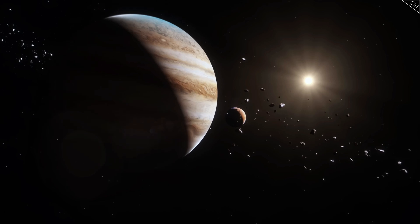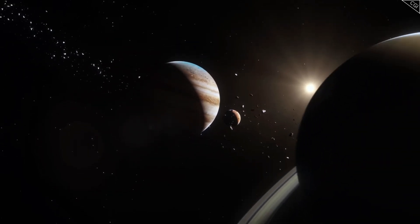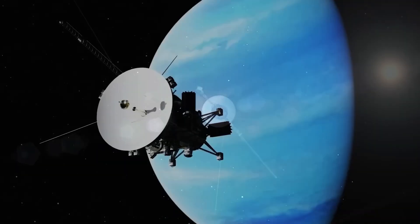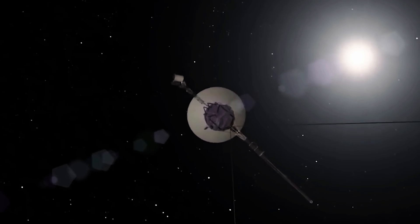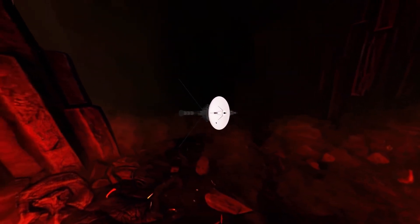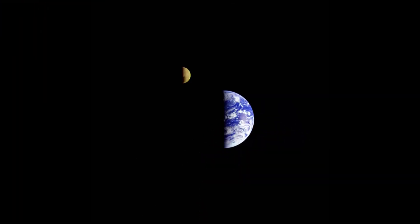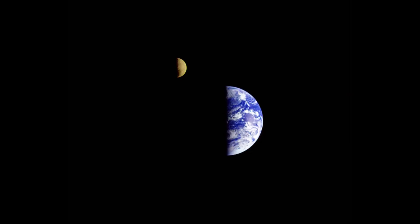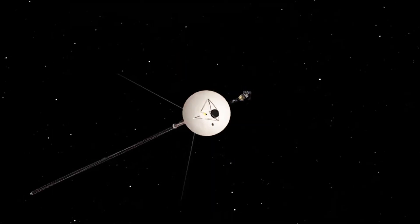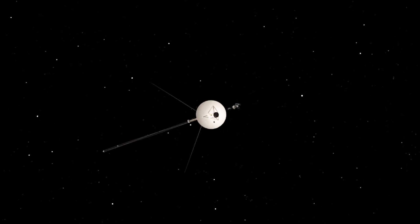NASA launched Voyager 1 shortly after its twin, Voyager 2. Thanks to a faster trajectory, Voyager 1 overtook its counterpart, speeding through space at 38,000 miles per hour compared to Voyager 2's 34,360 miles per hour. Just 13 days after launch, Voyager 1 captured a historic image of Earth and the moon from 7.2 million miles away, symbolizing the start of an unprecedented journey.